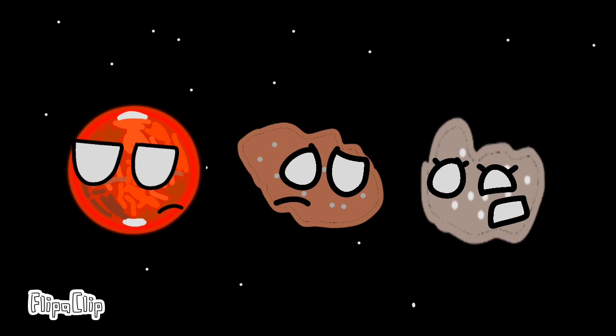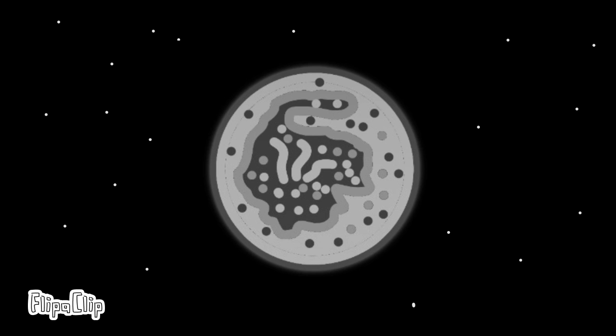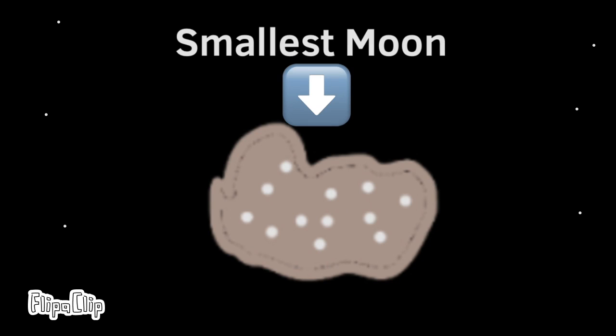Hey, Phobos? Yeah? Why are we so small? Small? Yeah. Like, compared to the Earth's moon, we're so feeble. And also, I'm literally the smallest moon in the solar system.